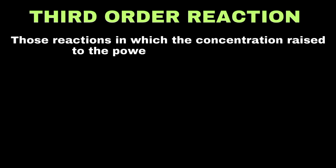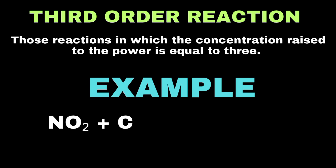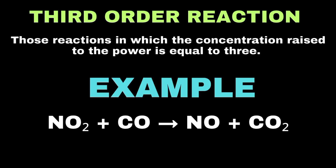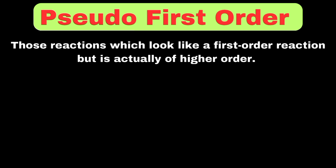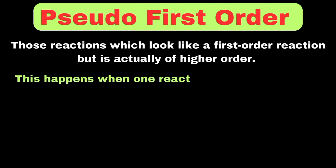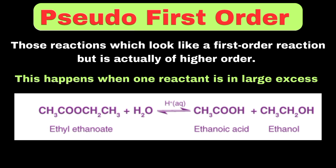Third-order reactions are those whose concentration is raised to the power of three in the rate law expression. A common example is the reaction between nitrogen dioxide and carbon monoxide. A pseudo-first-order reaction looks like a first-order reaction but is actually of a higher order, occurring when one reactant is present in large excess so its concentration remains almost constant. A common example is the hydrolysis of ethyl acetate with water.